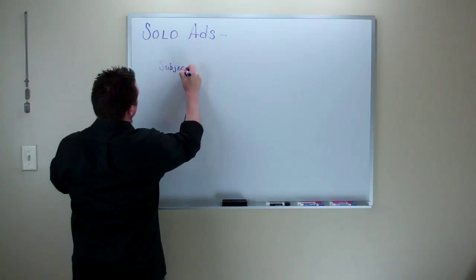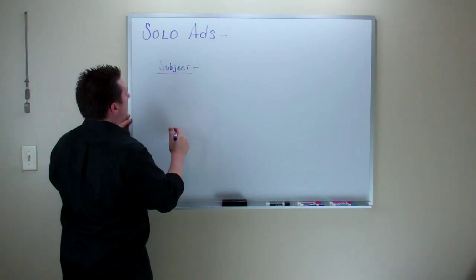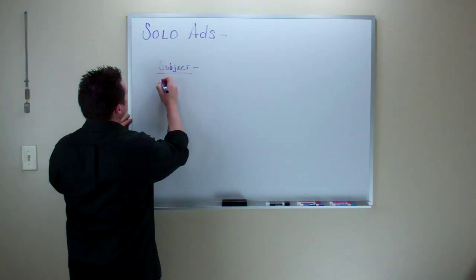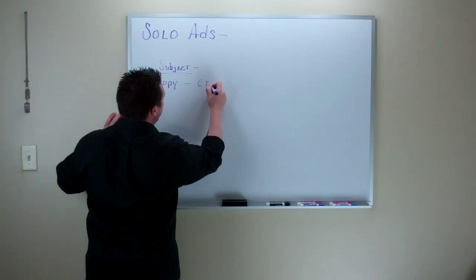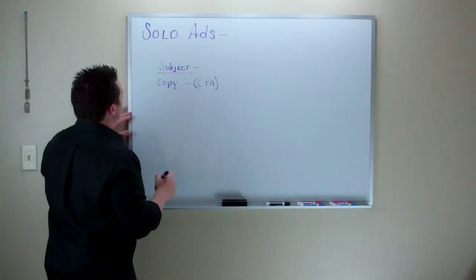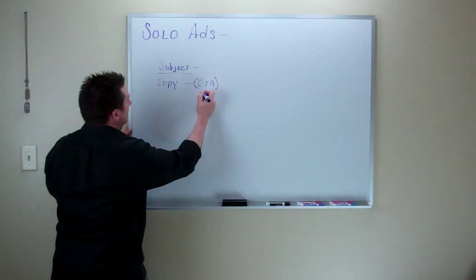Number one, let's start with the email. Number one, you need to have a very strong subject line. You need to have a good subject line in your email. And I'll help you guys out with some of this stuff. I'll give you some examples once we go through the on-screen training. And number two, you need good copy. So, your email, I call it copy, but that's your email. You need a good email copy with a good call to action. That's going to be your link inside the email.